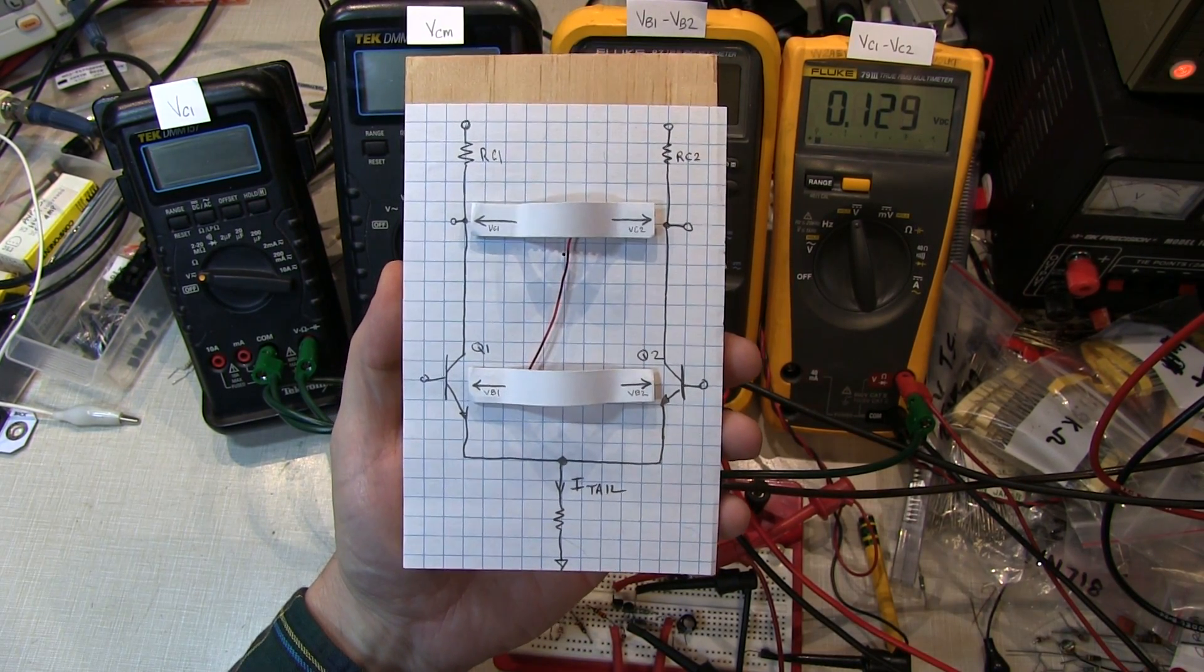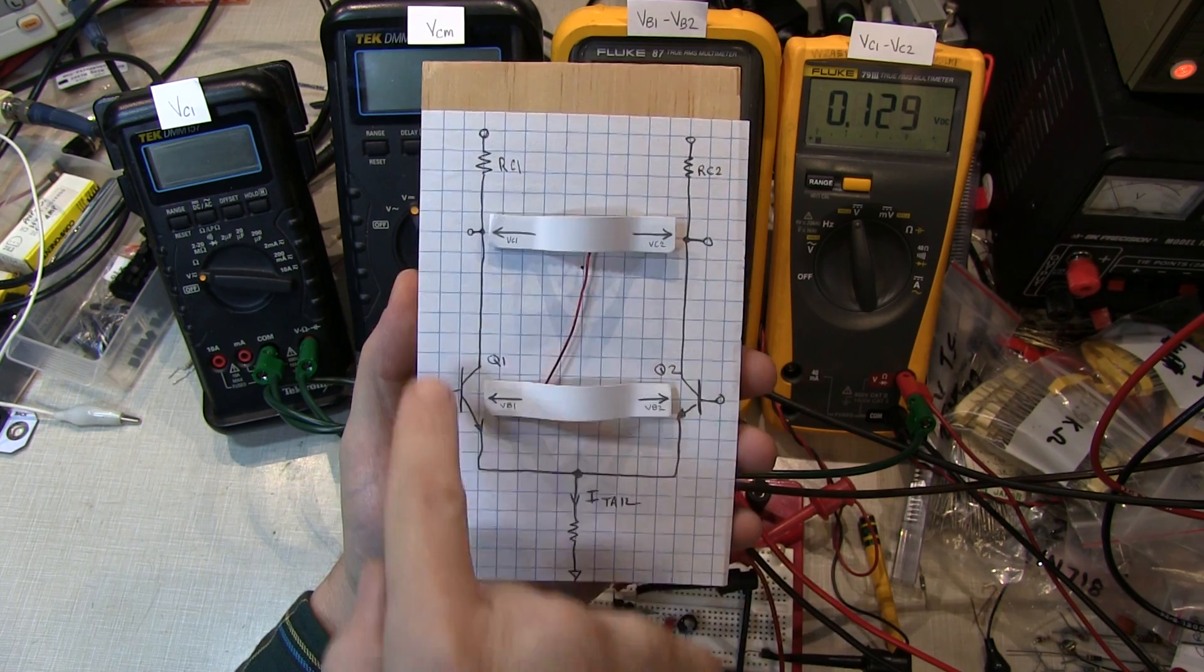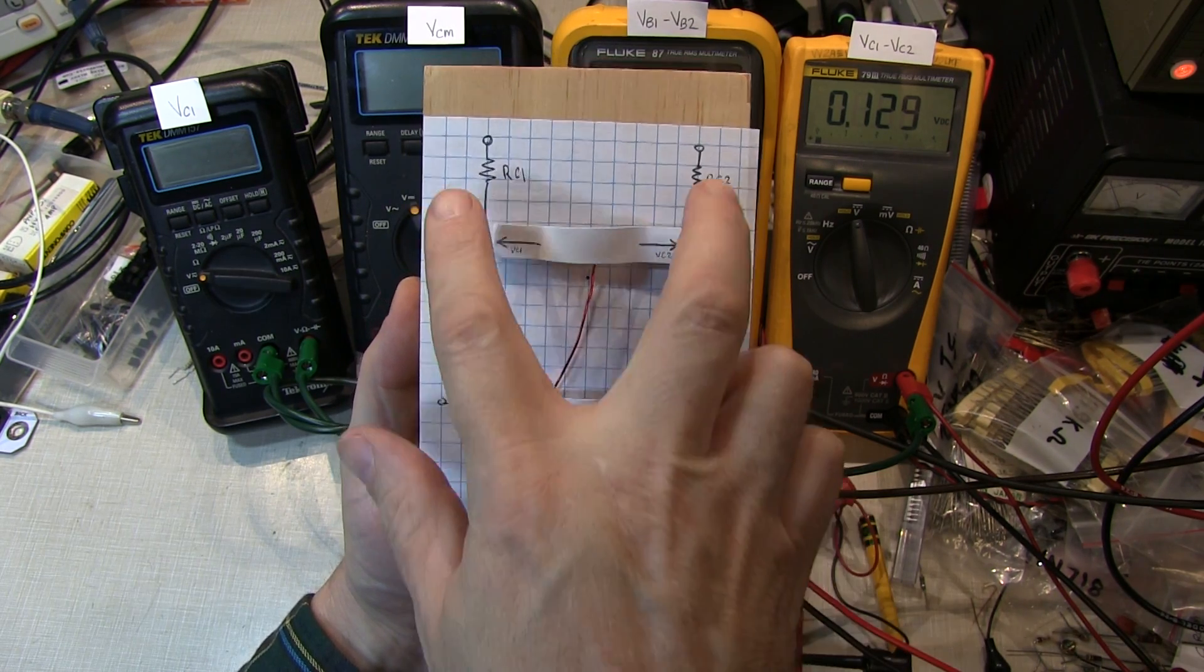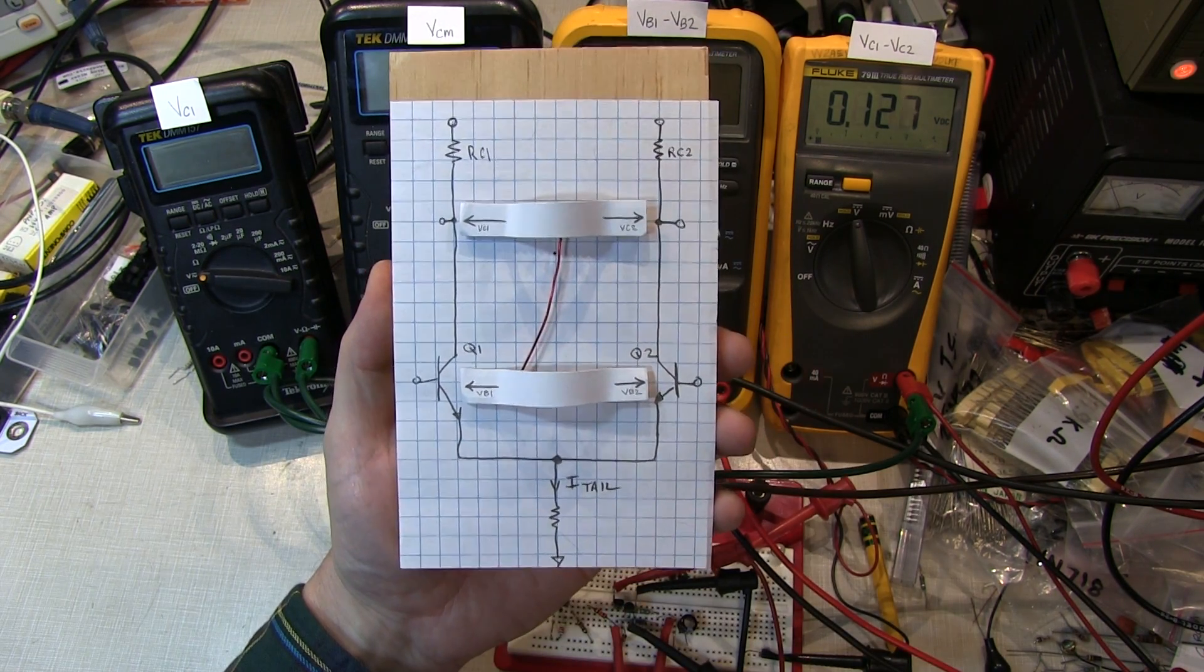Here's my little mechanical simulator to kind of show you what's going on. So here's my diff amp, Q1, Q2, the two load resistors, the tail current here.